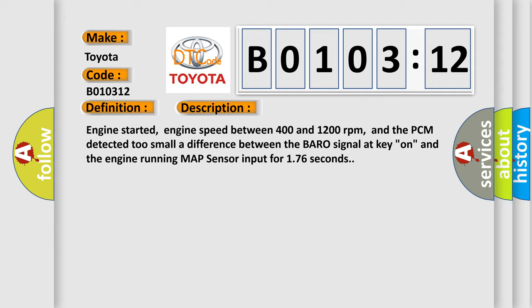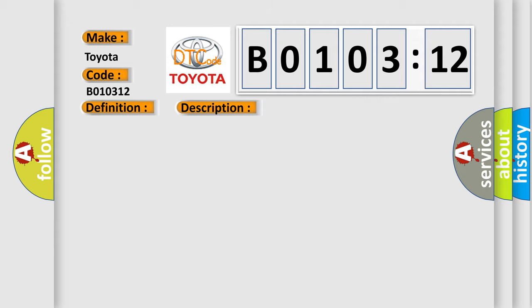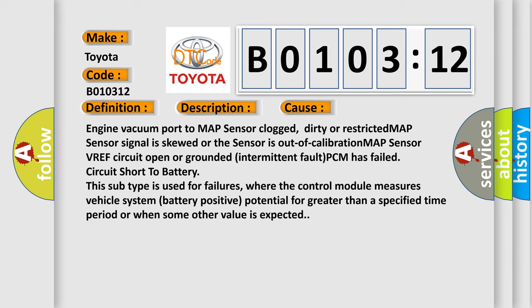This diagnostic error occurs most often in these cases. Engine vacuum port to MAP sensor clogged, dirty or restricted. MAP sensor signal is skewed or the sensor is out of calibration. MAP sensor VREF circuit open or grounded intermittent fault. PCM has failed. Circuit short to battery. This subtype is used for failures where the control module measures vehicle system battery positive potential for greater than a specified time period or when some other value is expected.